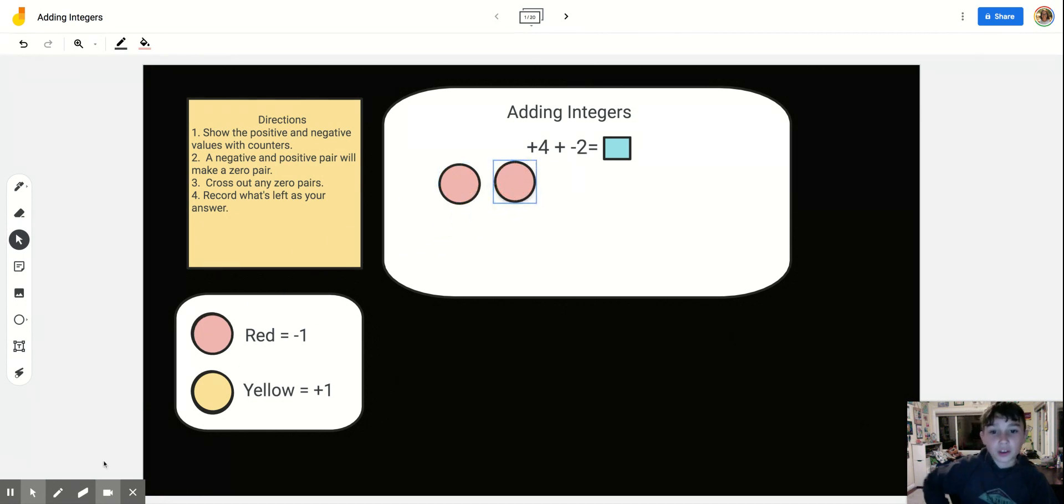We've got a negative 2 right there, so we're going to have two negative 1 circles. Then we're going to have yellow, which is positive circles. And each circle equals only one number.